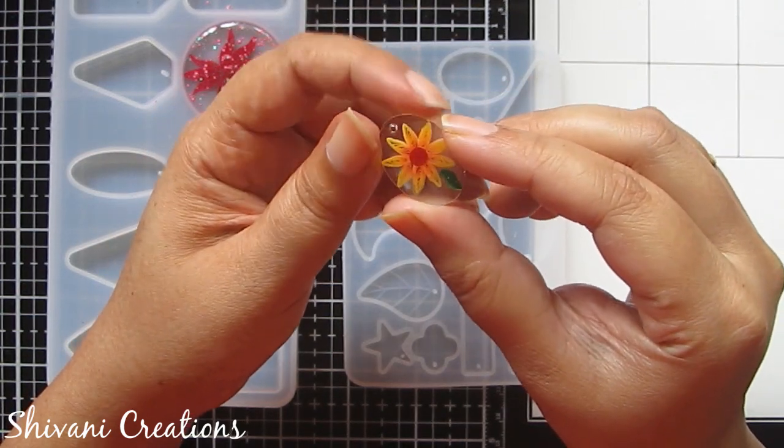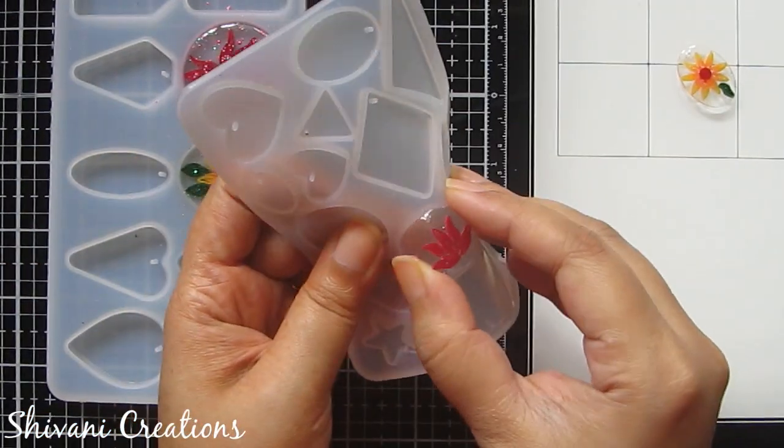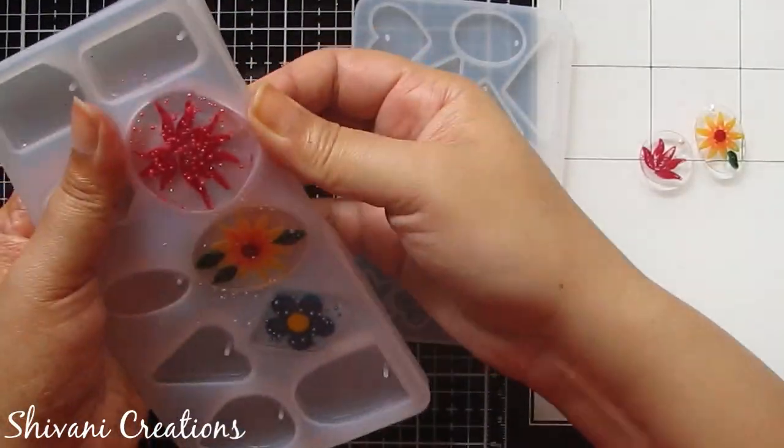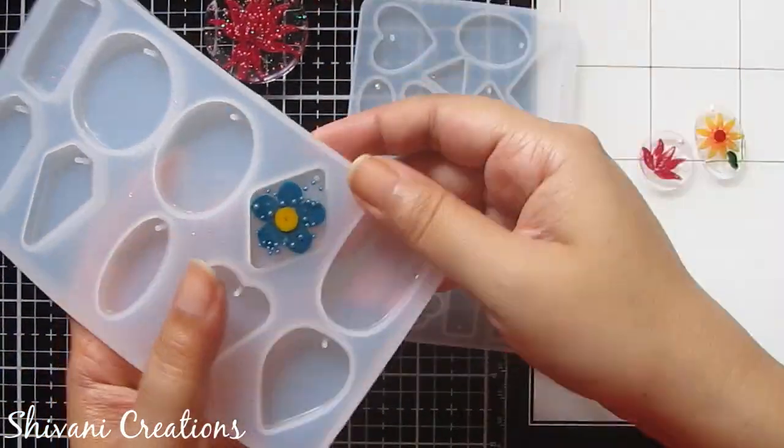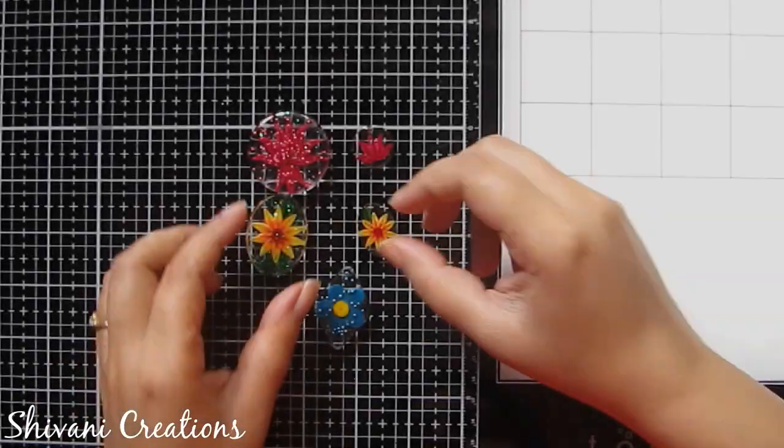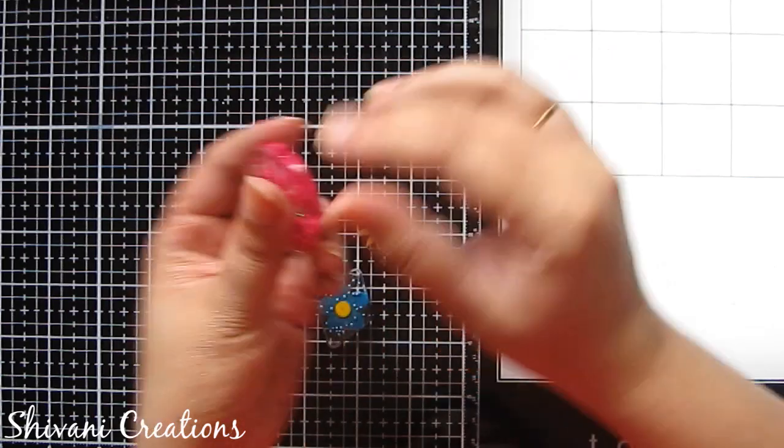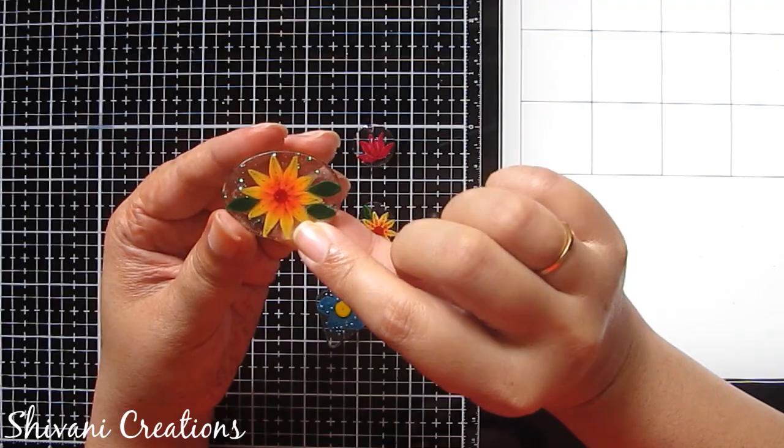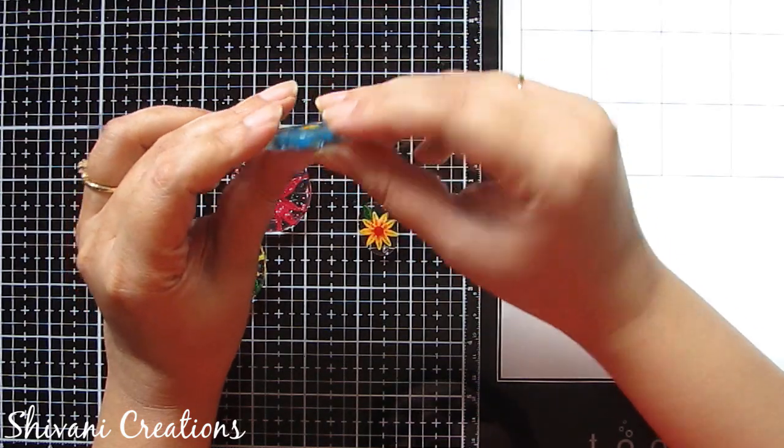So I am super happy with the result of the quilled resin designs. And in the same way you can create pendants, earrings or finger rings. All my designs are ready and they look like this. So shiny, so smooth, so much finishing and very hard.